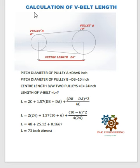We have two pulleys, pulley A and pulley B. The pitch diameter of pulley A is equal to 6 inches, and the pitch diameter of pulley B is equal to 10 inches. And the center length between these two pulleys is 24 inches.